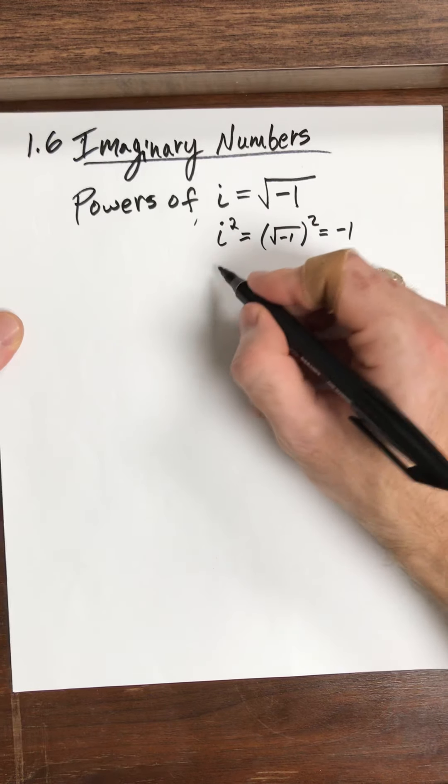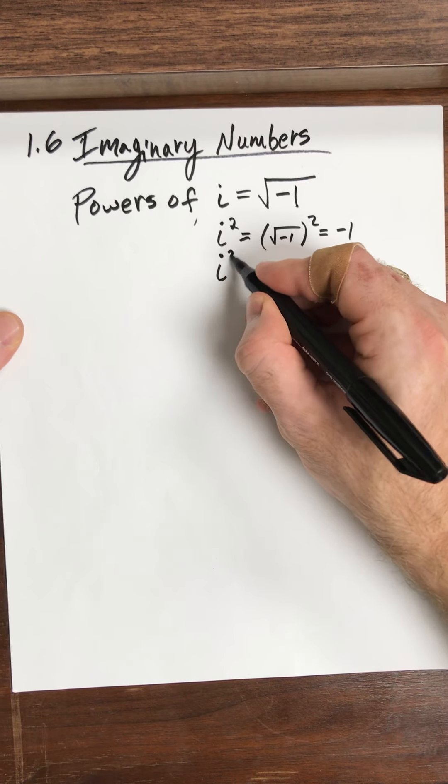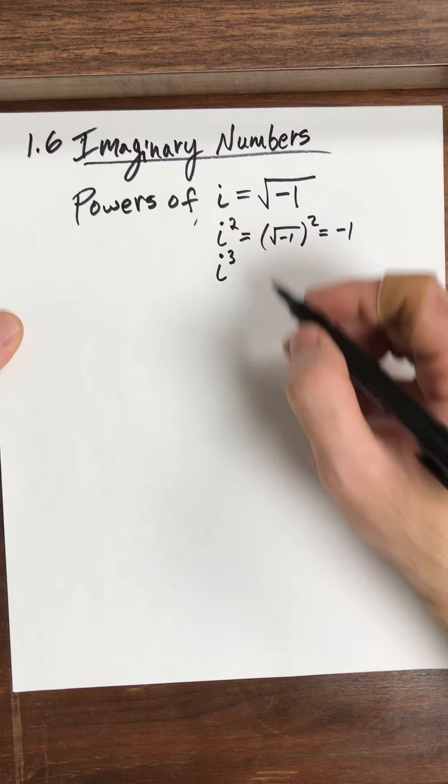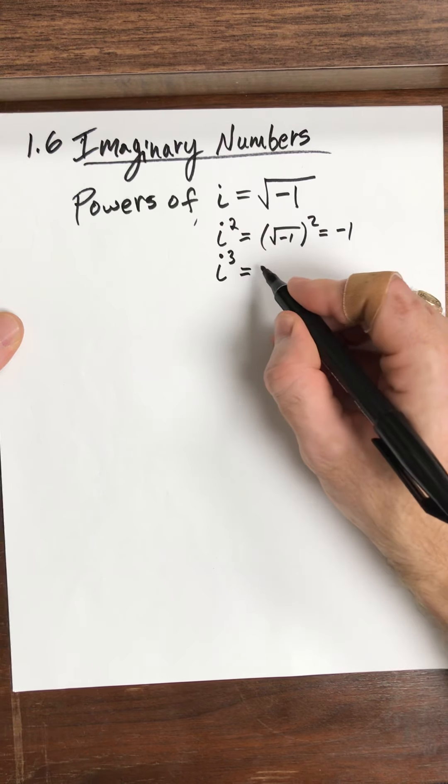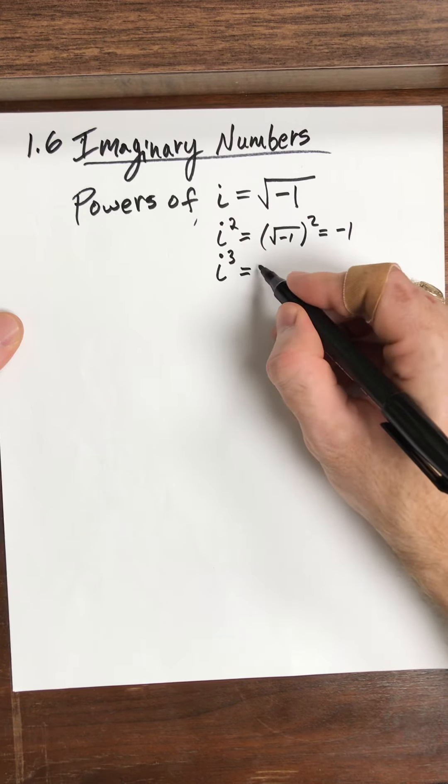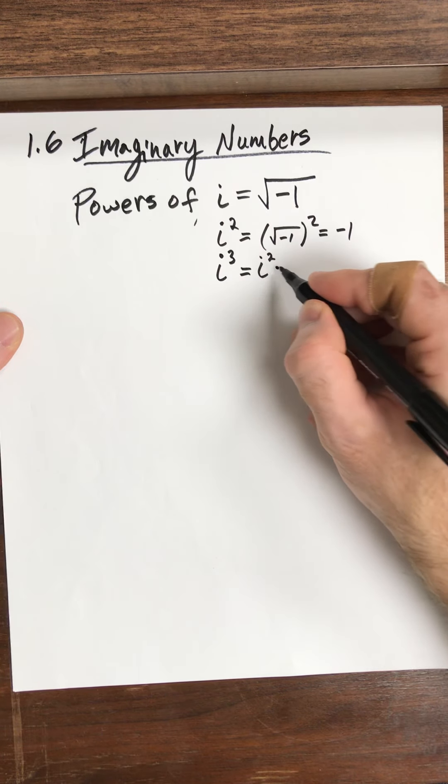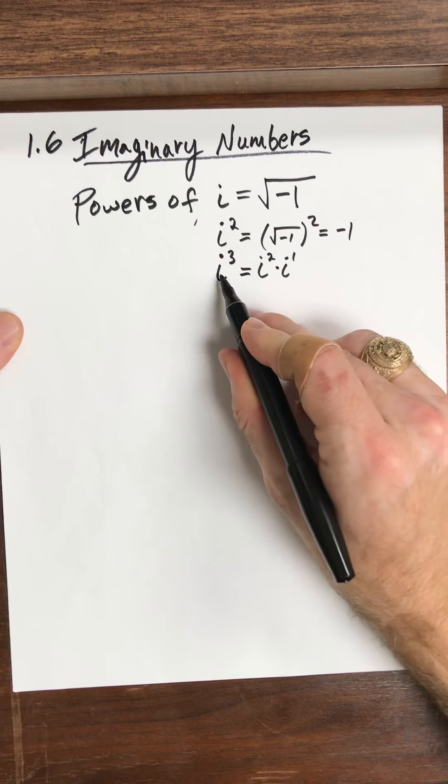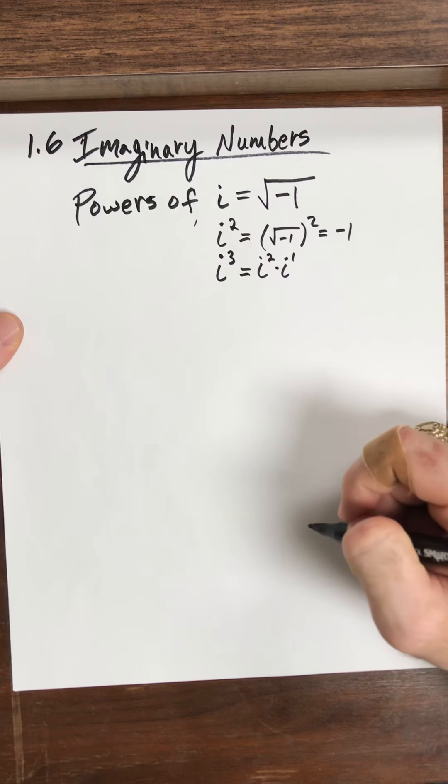Now, i cubed, let's go through i cubed. i cubed, what is this equal to? Well, this really can be broken up into i squared times i. So there's two i's here, one i here, there's i cubed, there's three i's total.